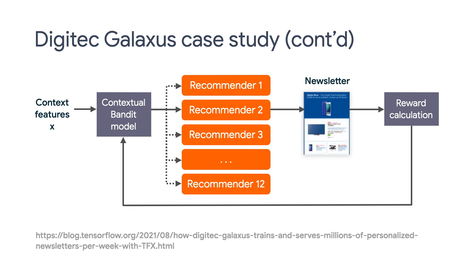Right now, this system has been successfully deployed into production, while TFX and the Digitec Galaxus team is working on leveraging more features in TF agents to further improve it. Note that this is a slightly different setup than the MovieLens setup we just talked about, but it shows a real-world application where it's not uncommon to have multiple recommenders, and how you could leverage different techniques to optimize complex recommendation systems. Feel free to check out this blog to learn more about it.